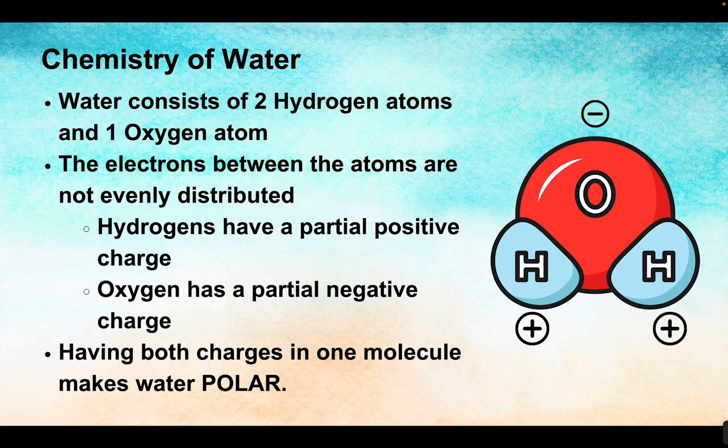So they're slightly negative on one side and slightly positive on the other side. We call this being a polar molecule. We have the poles of the earth that are opposite ends of the earth, and that's what polar means — opposites. Since we have two opposite charges on either side of a water molecule, we call this molecule polar. This is really important to water's versatility and its properties to allow life where water is.